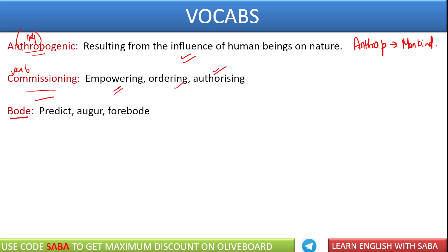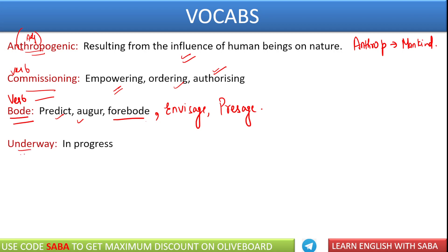Next word we have is bode — again a very important word. Bode is also a verb. Bode का मतलब होता है forward, मतलब predict, अनुमान लगाना. इसके लिए काफी अच्छे words हैं — that is envisage, presage. All these are good words for bode — मतलब किसी भी चीज़ को predict करना, indicate करना, that is called bode. Next word we have is underway. Underway मतलब in progress — if something is underway, वो progress में है. This session is underway — इसका मतलब यो progress में है, completely हो नहीं है but progress में है — that is called underway.